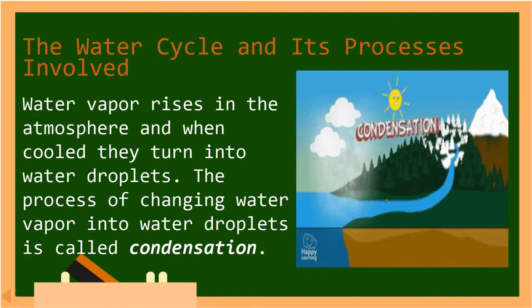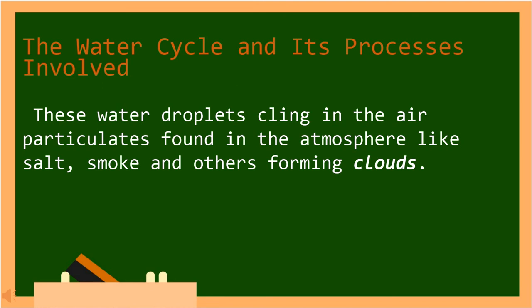Water vapor rises in the atmosphere and when cooled, they turn into water droplets. The process of changing water vapor into water droplets is called condensation. These water droplets cling to the air particulates found in the atmosphere like salt, smoke, and others, forming clouds. In Tagalog, ang mga patak ng tubig na ito ay nakakapit sa mga particle ng hangin na matatagpuan sa hinpapawit tulad ng asin, usok, at iba pa na bumubuo ng mga ulap.